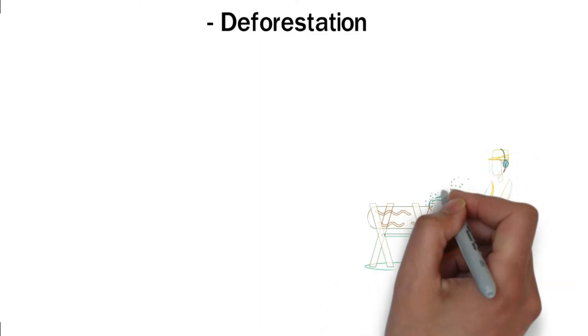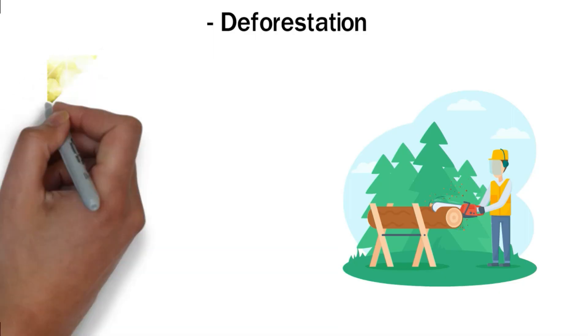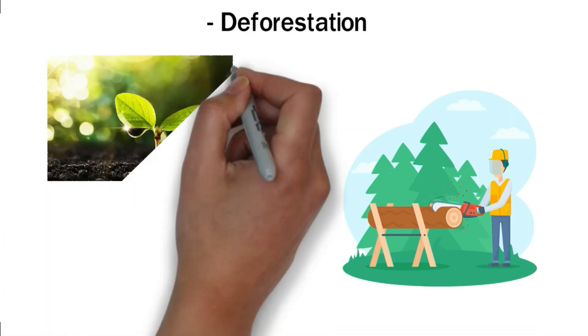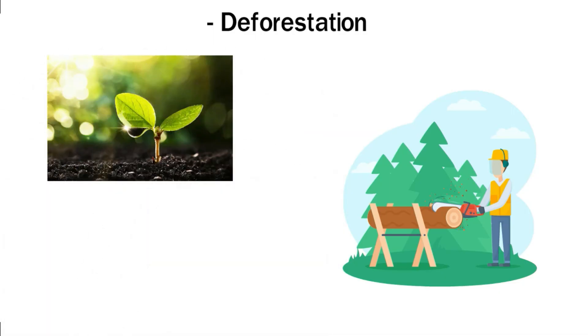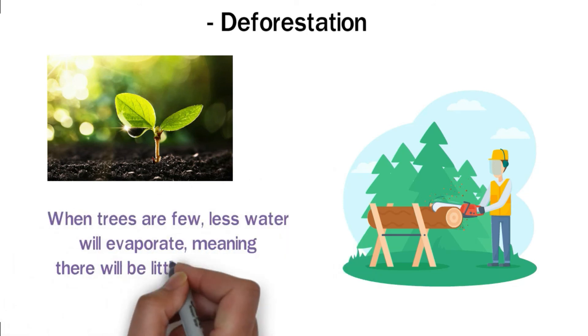Deforestation. Deforestation is the removal of a large number of trees over a wide area. Trees contribute a lot to the water cycle when they transpire. As such, their destruction can have a serious impact on how water moves into the atmosphere. When trees are few, less water will evaporate, meaning there will be little or no rainfall.